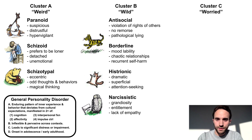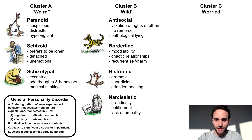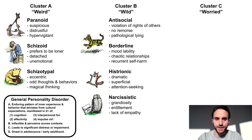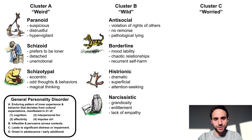Moving on to Cluster B, antisocial personality disorder involves repeated violation of the rights of others, often with no remorse and pathological lying. In Winnie the Pooh, Tigger is known to frequently lie about his abilities and has little regard for the feelings of those around him. Borderline personality disorder is characterized by prominent mood lability, chaotic relationships, and recurrent self-harm. Tigger has some similarities to this diagnosis as well, considering his rapid mood shifts from excitement to deflation and how his behavior causes problems in his relationships.